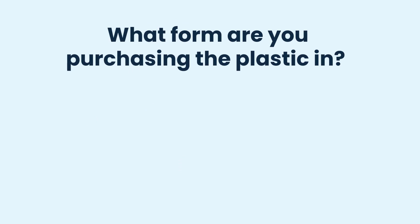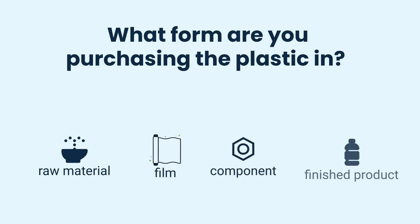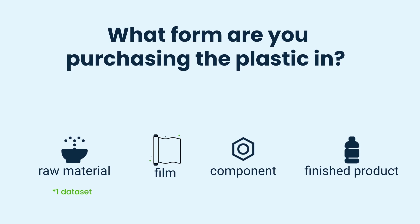First, determine the form in which you're buying the plastic. Is it a raw material like granulate or resin, or is it processed into a film, component, or finished product? If you're buying granulate or resin, you'll only need one EcoInvent dataset. However, if you're purchasing a more processed form, you'll need to model the raw material and the processing separately.